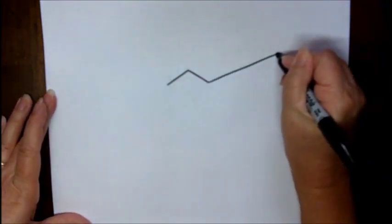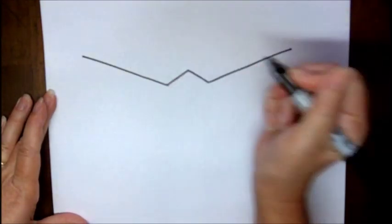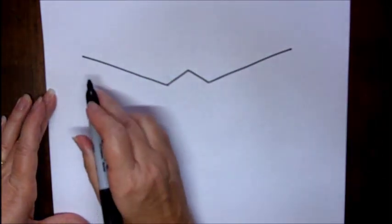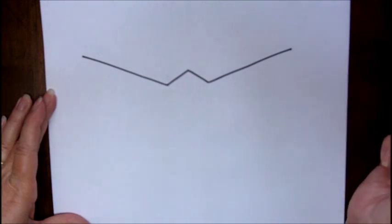Then I'm going to make two lines coming out from that V. It almost looks like a really wide W.